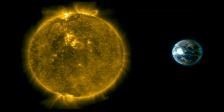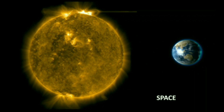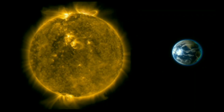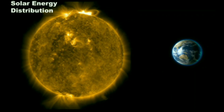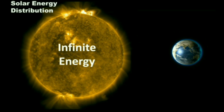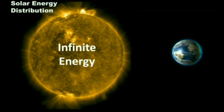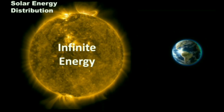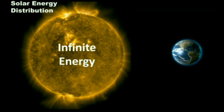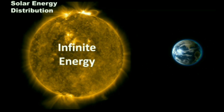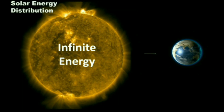The Sun is an infinite energy source in our galaxy and continues to supply cosmic rays and heat energy since billions of years. The Sun distributes energy to every planet of this galaxy, and this energy reaches Earth as well.